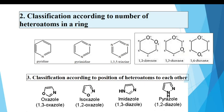A different category of classification is according to the number of heteroatoms present in the ring. For a six-membered ring: if only one nitrogen is present, it is pyridine; if two nitrogens are present at the 1 and 3 positions, it is pyrimidine; and if three nitrogens are present, it is 1,3,5-triazine. Similarly for oxygen, the naming is based on the presence of oxygen atoms: 1,2-dioxane, 1,3-dioxane, and 1,4-dioxane.